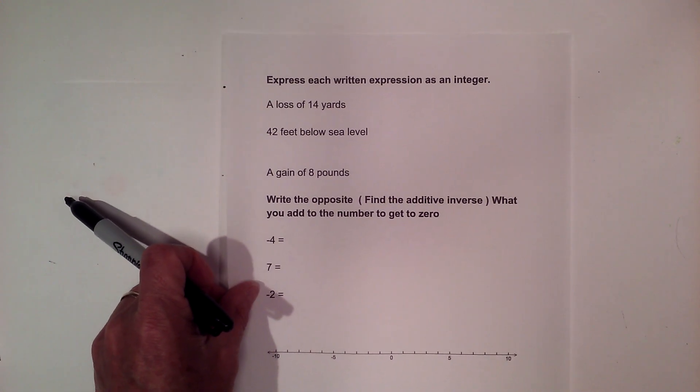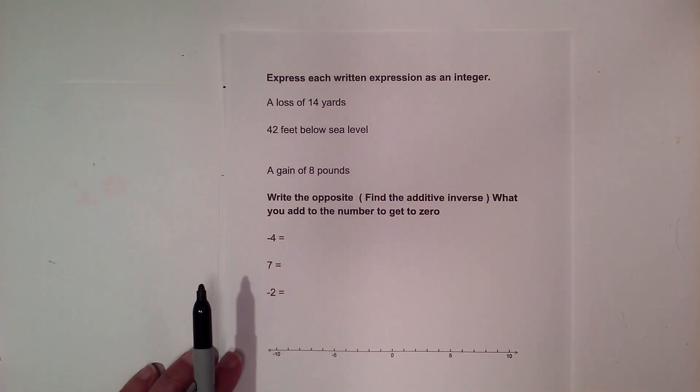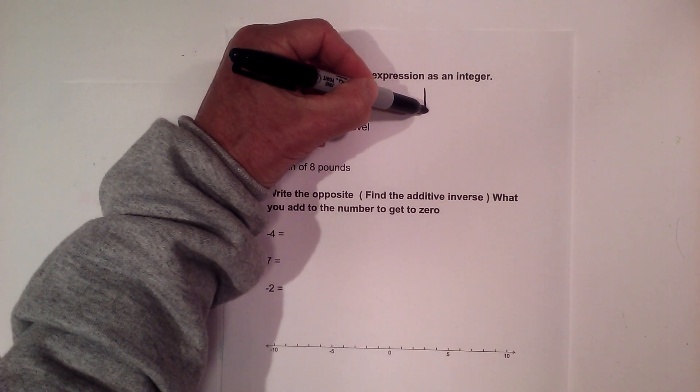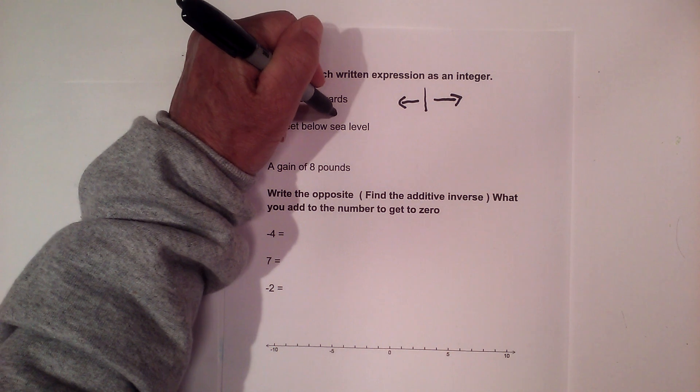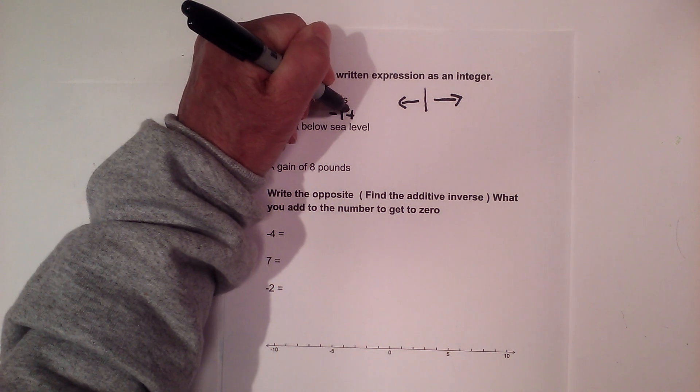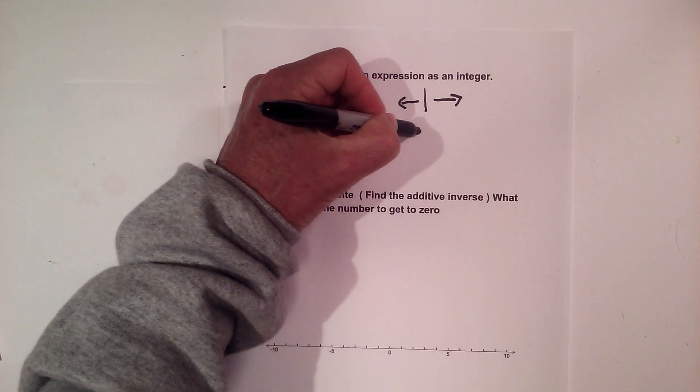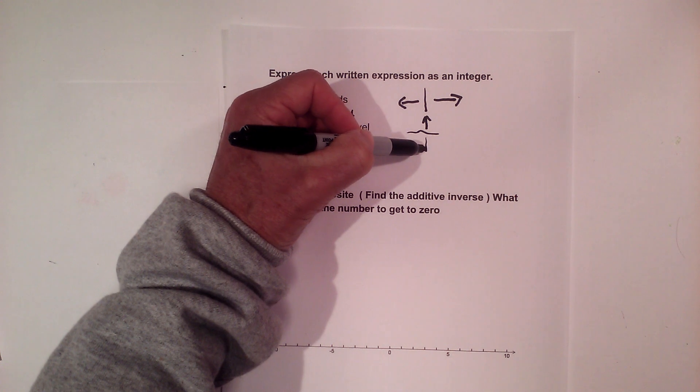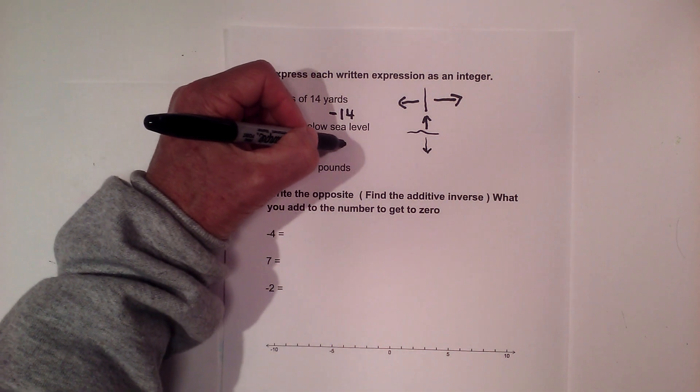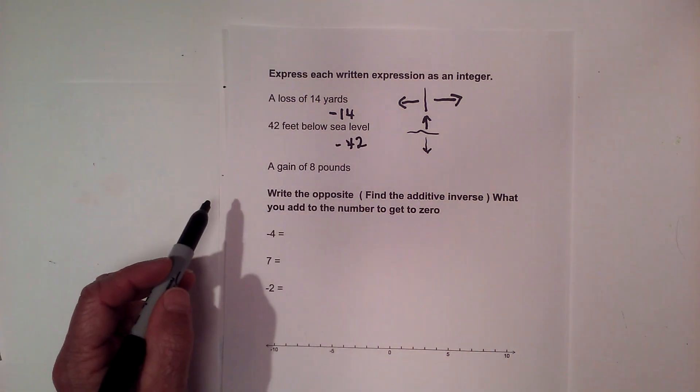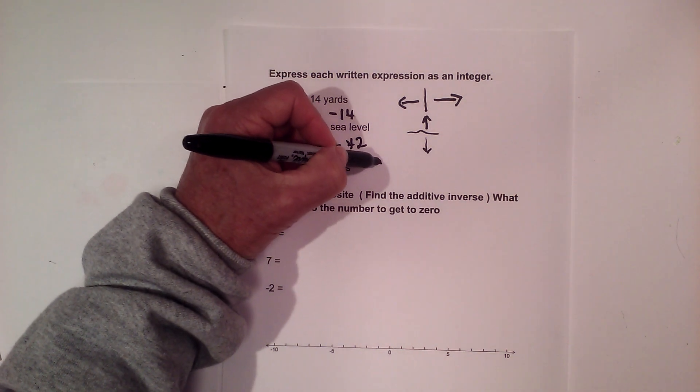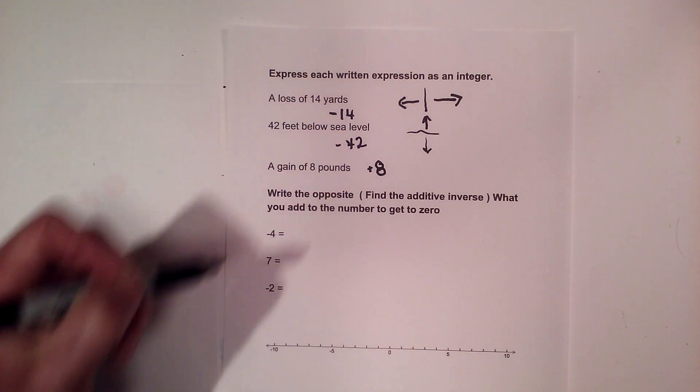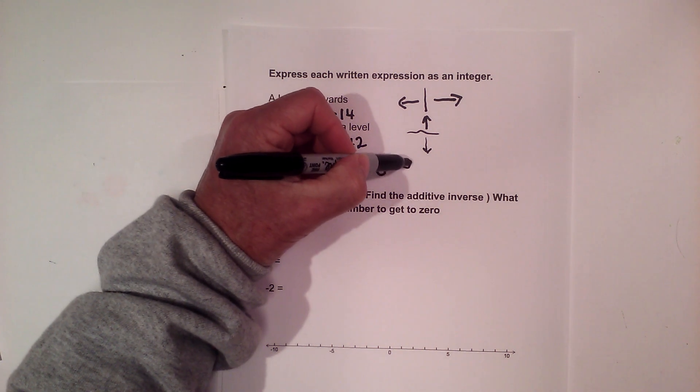Up first, express each written expression as an integer. A loss of 14 yards. Imagine we are playing football. Here is the line of scrimmage. Positive would be a gain towards the end zone. Negative would be going backwards, so it would be negative 14. Forty-two feet below sea level. Here is sea level, positive is above sea level. Under the sea is negative, so it would be negative 42. And finally, a gain of 8 pounds. My dog eats 8 pounds of dog food, gains from 10 to 18 pounds. So that would be a positive 8, or you could just write it as 8.